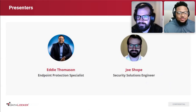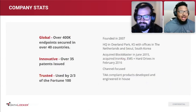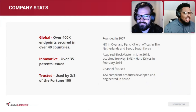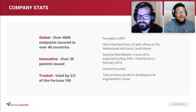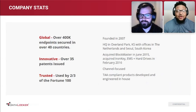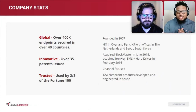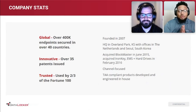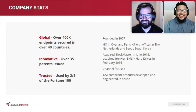So, real quick, we've got to go through the formalities to let you guys know who we are. At DataLocker, we're a global company — we have over 400,000 endpoints secured over 40 countries. We have over 35 patents issued, as well as being trusted by two-thirds of the Fortune 100. We're very proud of what we do here at DataLocker, because our mission is to be simply secure. We want to make sure that your data and your information is safe in your environment. We're headquartered in Kansas City, which is why Joe talked about being in the Midwest.